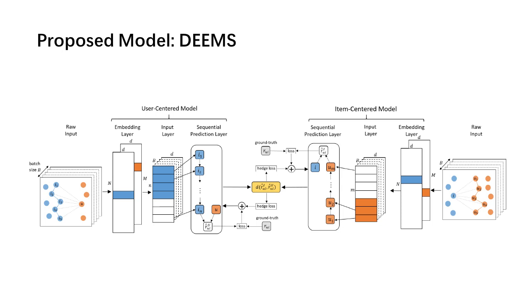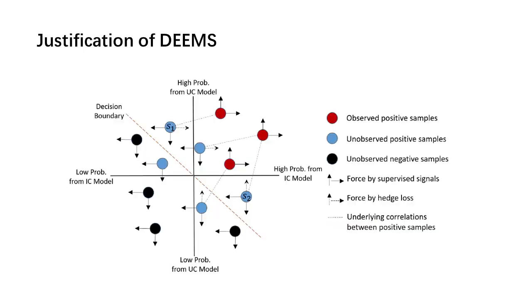And in the training procedure, we let one model treat the prediction result of another as the label. So the whole training procedure pushes the two models to obtain similar prediction results.